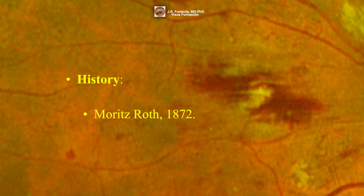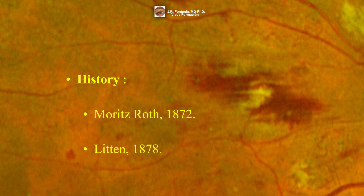Originally described by Maurice Roth in 1872 while at the University of Basel, Roth spots were first seen in individuals with bacteremia secondary to subacute bacterial endocarditis. The retinal findings Roth made in 1872 were described as round, oval, or flame-shaped hemorrhages with a central white spot, as you can see in this image. However, it was not until 1878 that this condition was assigned the name Roth spot by the biologist Litten, who reported that these white-centered retinal hemorrhages had been detected in 80% of cases associated with subacute bacterial endocarditis, thus cementing the hallmark association.